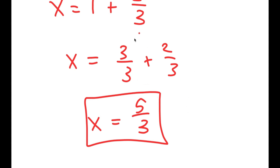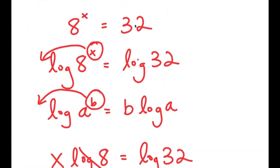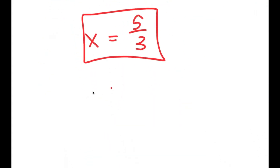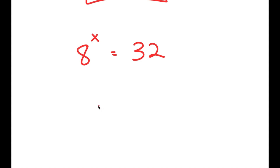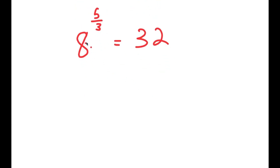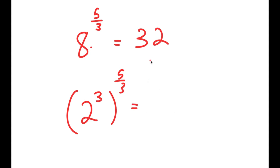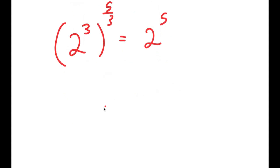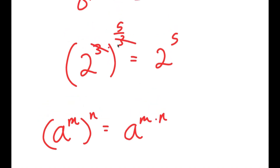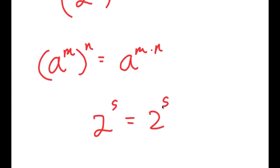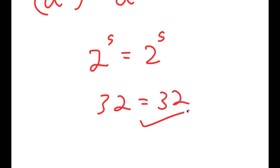Now, how do we know that this is the right answer? Going back, we have 8 to the power of x equals 32, and we're plugging in 5 over 3. So we get 8 to the power of 5 over 3 is equal to 32, which is the same thing as 2 to the power of 5. Since 8 is 2 to the power of 3, I get 2 to the power of 3 to the power of 5 over 3. Using the rule a to the power of m to the power of n equals a to the power of m times n, the two 3s cancel out, and I get 2 to the power of 5 equals 2 to the power of 5, or 32 equals 32. This is right.